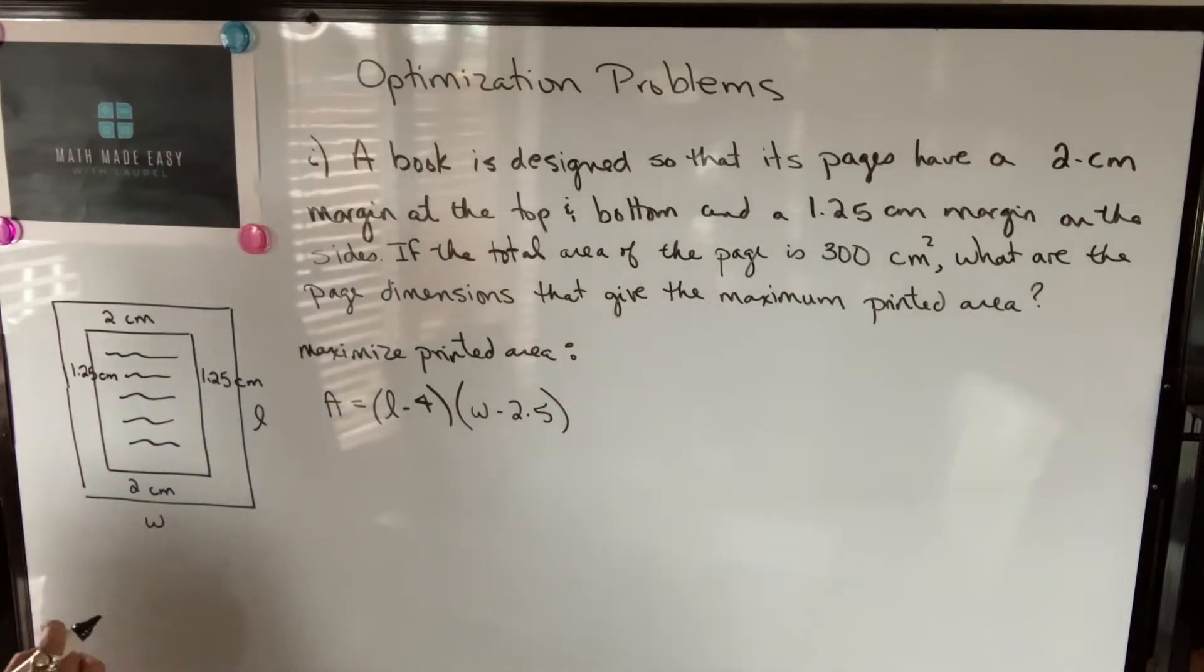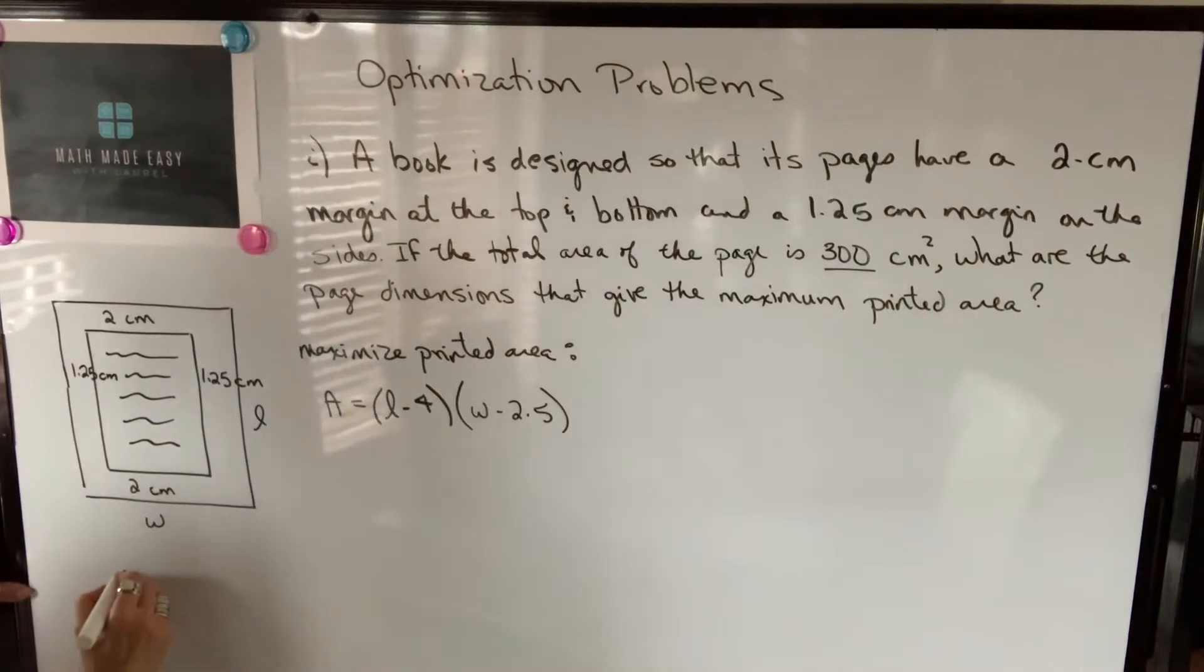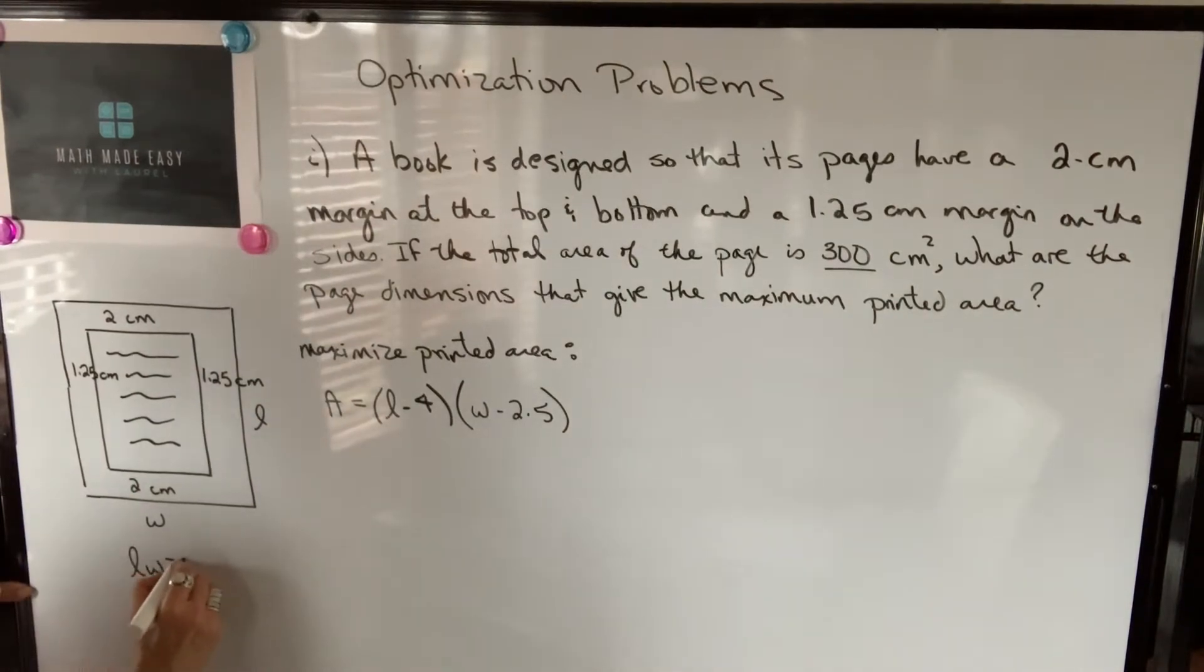However, we do know that the total area is 300 square meters, so we know that L times W is equal to 300.